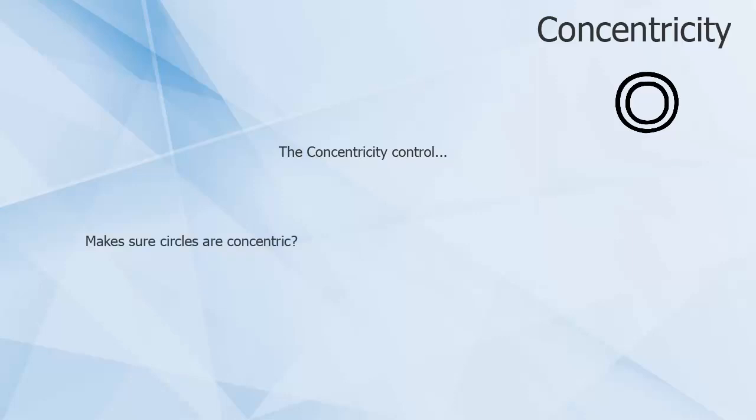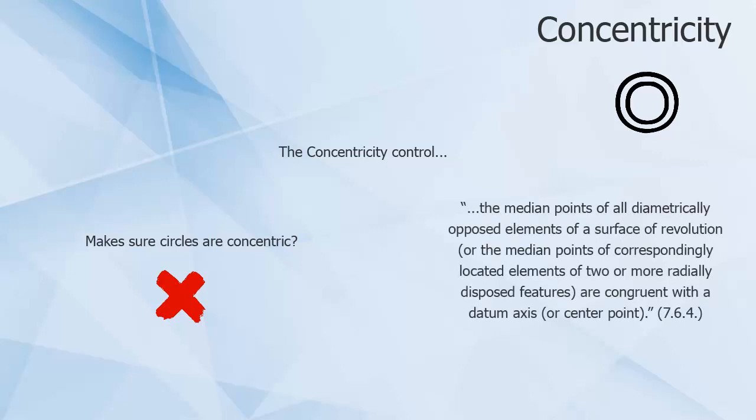Concentricity doesn't actually make sure that circles are concentric. What it does do is make sure that the median points of all diametrically opposed elements of a surface of revolution, or the median points of correspondingly located elements of two or more radially disposed features, are congruent with a datum axis or center point.